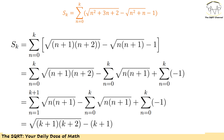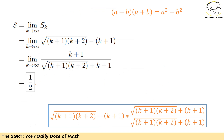Now let's simplify everything. The last sigma runs from 0 to k, so there are k+1 terms and it contributes −(k+1). Combined with what we found from the first two terms, the whole expression for Sk simplifies to √((k+1)(k+2)) − (k+1).